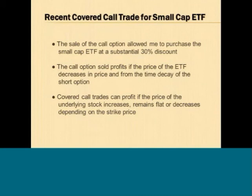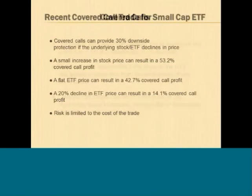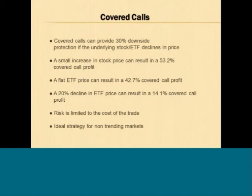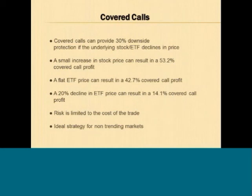This covered call trade can profit if the price of the underlying stock or ETF increases, remains flat, or even decreases. In this particular example, the ETF provides downside protection because I bought it at a 30% discount. A small increase in the stock price would result in a 53% return. A flat ETF price would result in a 42% return, and a 20% decline in the ETF would result in a 14% return. The risk is limited to the cost of the trade. This is an ideal strategy for non-trending markets.